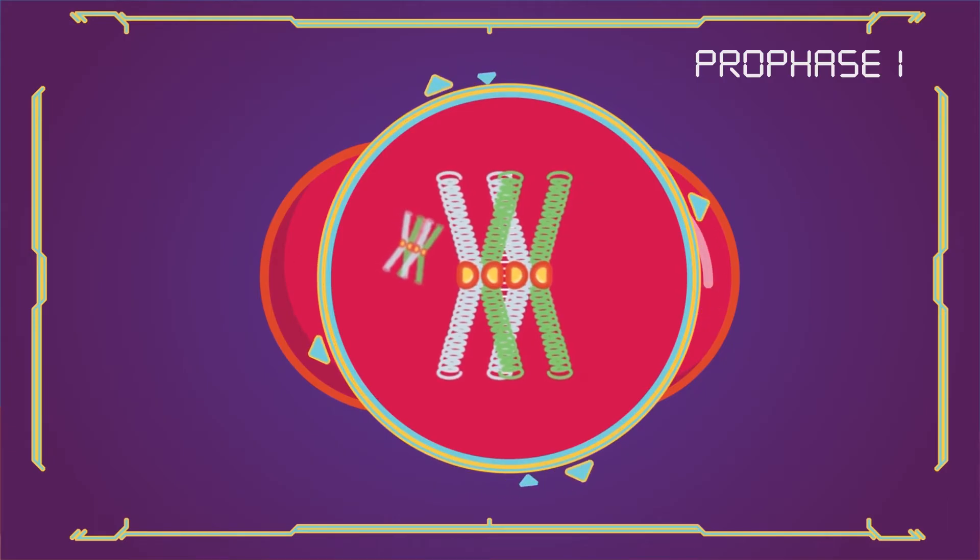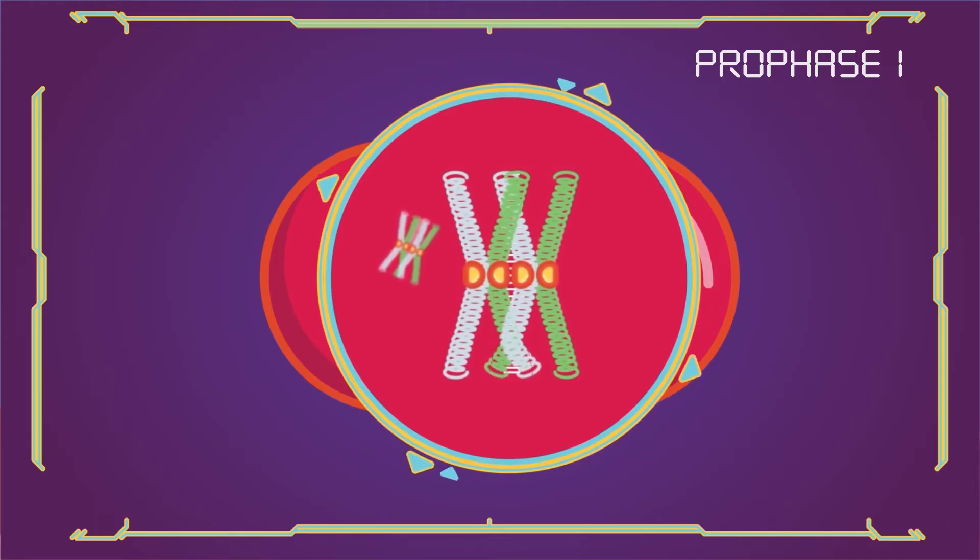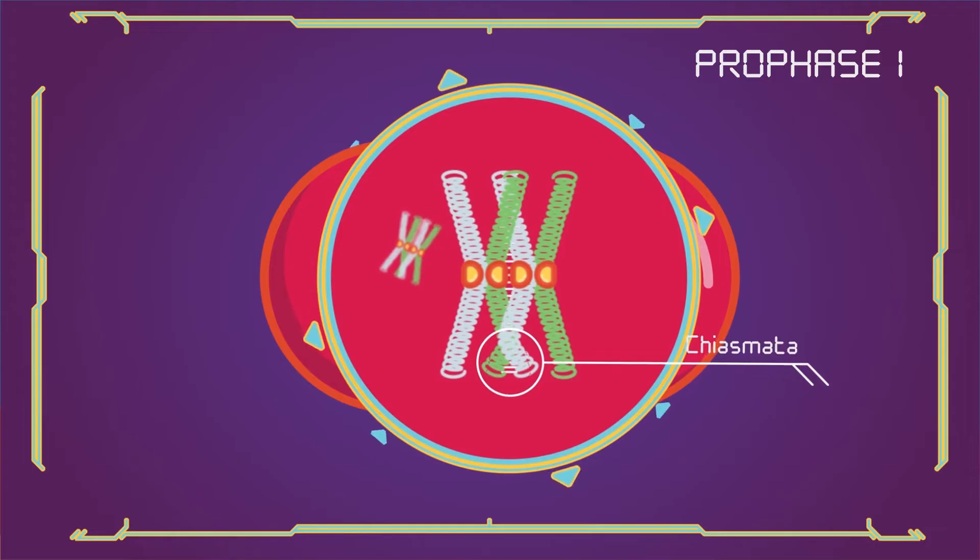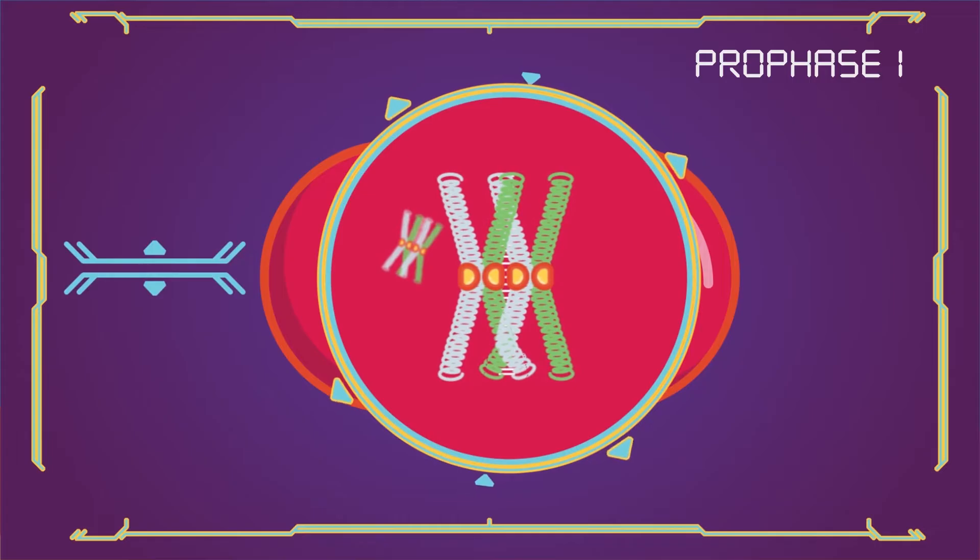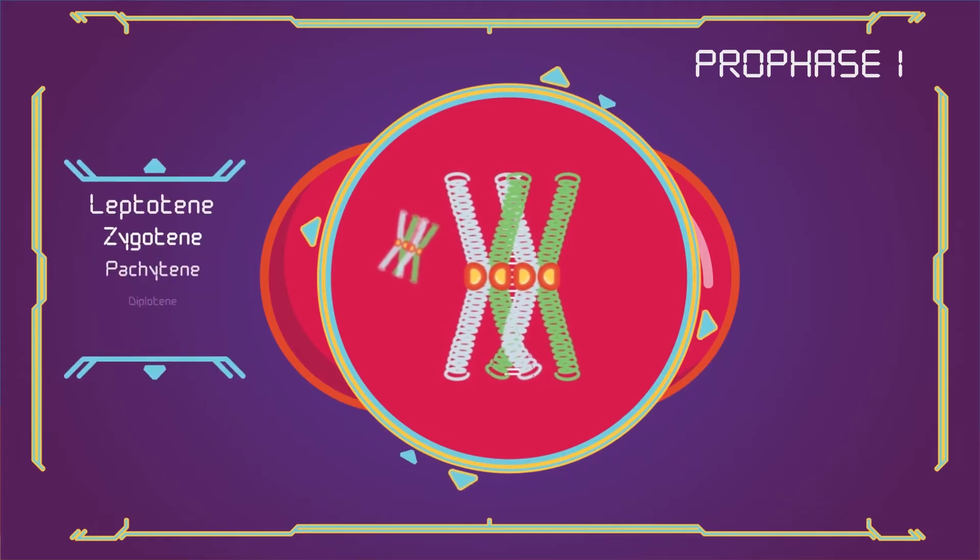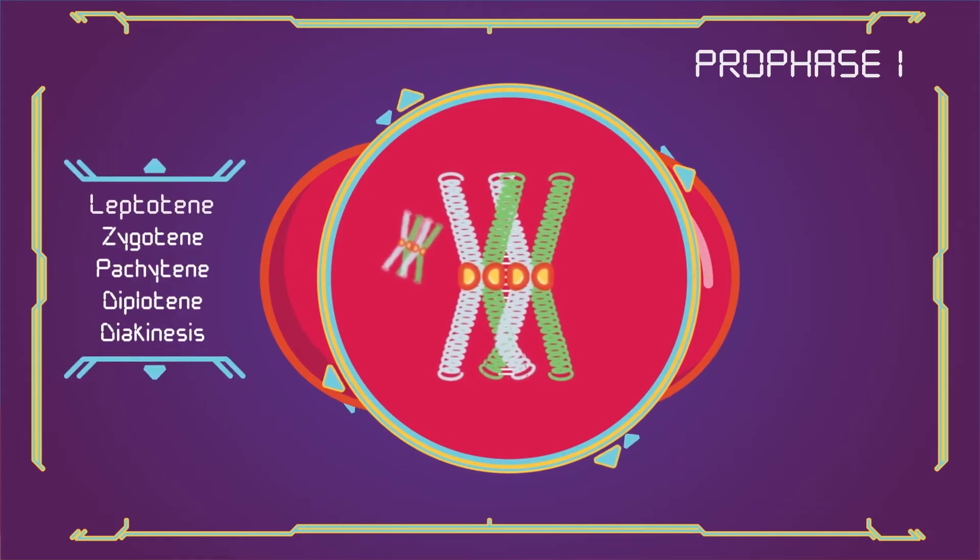The process of pairing the homologous chromosomes is called synapsis. At this stage, non-sister chromatids may cross over at points called chiasmata (plural, singular chiasma). Prophase 1 has historically been divided into a series of substages, which are named according to the appearance of chromosomes.